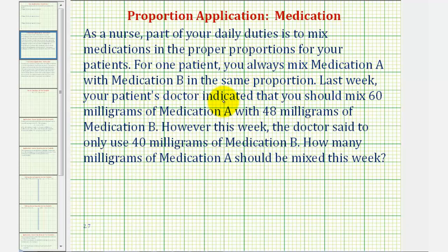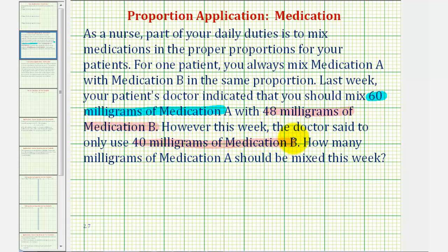Last week, your patient's doctor indicated that you should mix 60 milligrams of medication A with 48 milligrams of medication B. Notice the ratio of medication A to medication B would be 60 to 48. However, this week, the doctor said to use 40 milligrams of medication B. The question is, how many milligrams of medication A should be mixed this week?